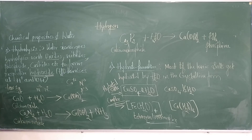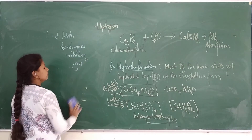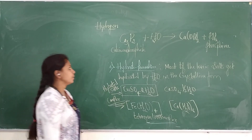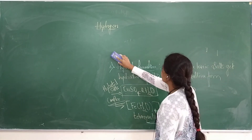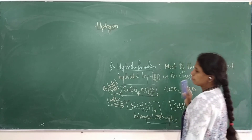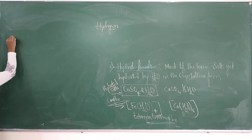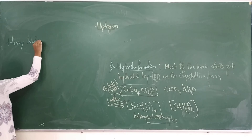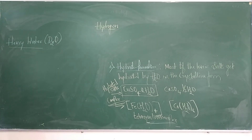So among the chemical properties of water: first is stability, second is conductivity, third is amphoteric nature, fourth it acts as an oxidizing agent, fifth it undergoes hydrolysis, and the sixth is hydrate formation — where hydrate formation occurs with ionic salts either as hydrated salts or as complexes/coordination compounds. Now after water, the next part is heavy water, whose formula is D₂O.